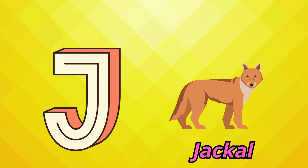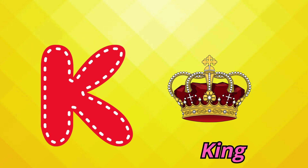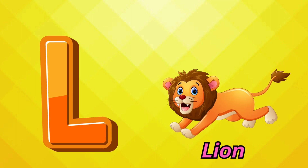Dum-dee-da-dum-dee-dum. I is for ice, i-i-ice. J is for jackal, j-j-jackal. K is for king, k-k-king. L is for lion, l-l-lion.